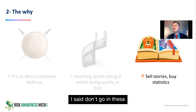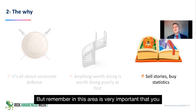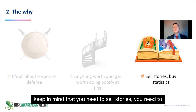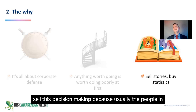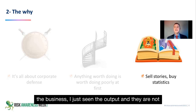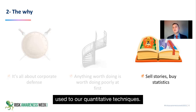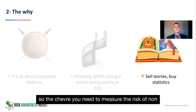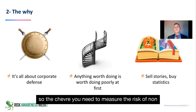You can also help calculate the right level of pricing in concession bids and contracts. There is a lot of risk financing — go or no-go decisions in due diligence. In this area, it's very important to remember that you need to sell stories and sell this decision-making, because usually people in the business only see the output and are not used to our quantitative techniques.